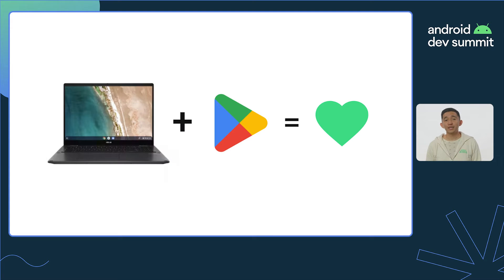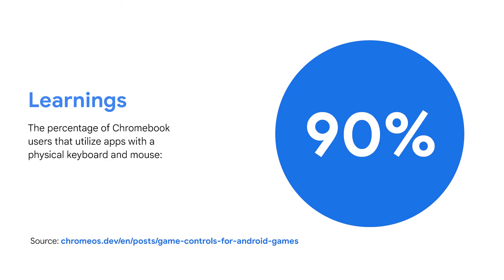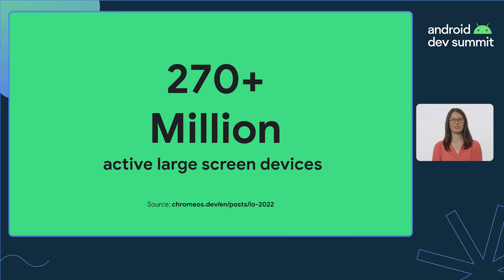Did you know the vast majority of apps available on Google Play are also available for download on Chromebooks as well? As we expand our scope to consider Chromebooks, we see the keyboard is a vital component built into the device. Therefore, adding keyboard and mouse support becomes essential to expand your app's reach across all large screen devices. On Chromebooks alone, approximately 90% of Chromebook users use apps with a physical keyboard and mouse. With that percentage and over 270 million active large screen Android users today, developers have hundreds of millions of reasons to optimize their apps to support the input methods that these users are utilizing on their large screen devices.